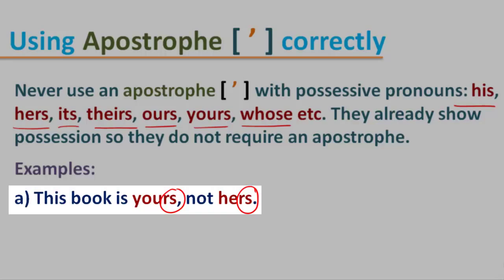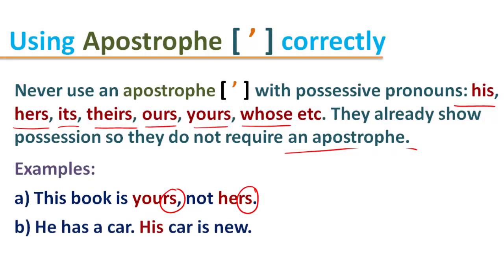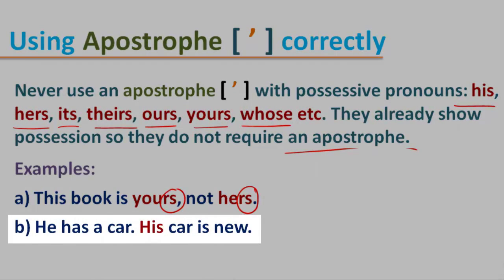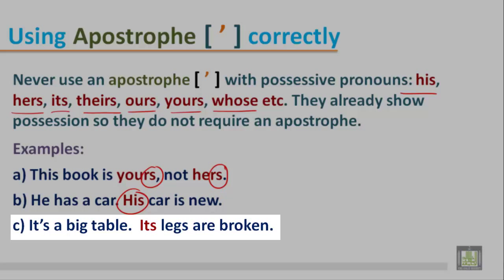Example B: 'He has a car. His car is new.' In this sentence, 'his' is a possessive pronoun, so it doesn't require an apostrophe. Example C: 'It's a big table. Its legs are broken.' In this sentence, 'its' is a possessive pronoun and doesn't require an apostrophe.